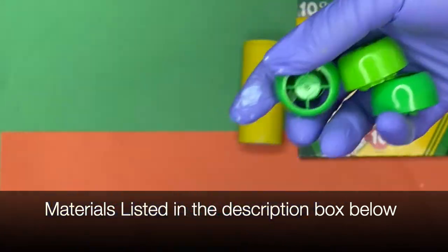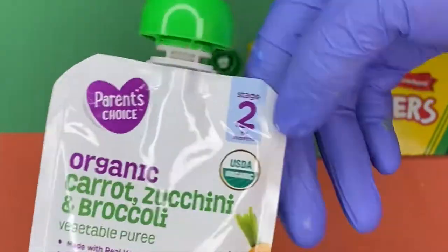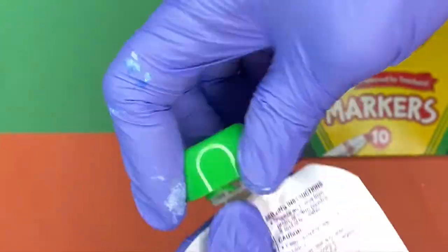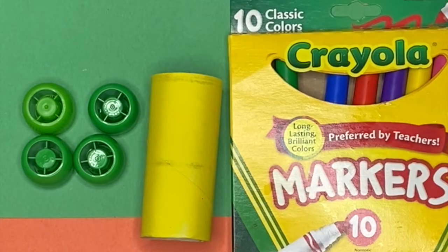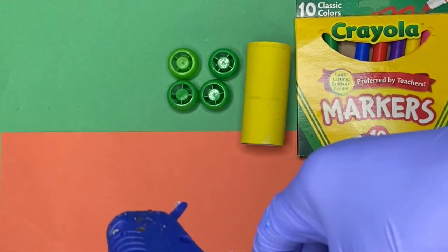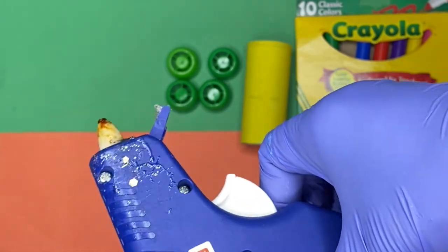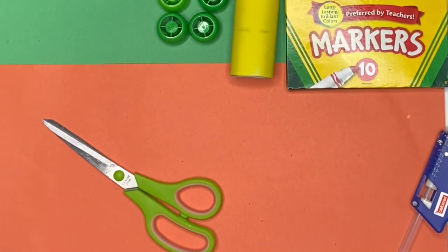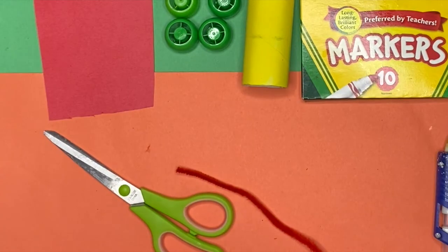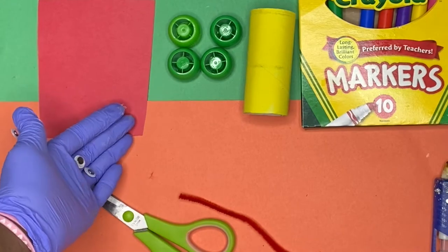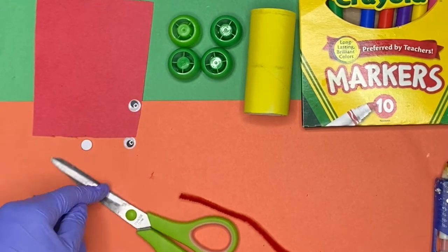Alright, so go ahead and grab some markers, a paper towel roll, go ahead and paint it too. I already painted mine in advance. The little tops off the little squeezies, you're going to need four of those. And you're going to need a hot glue, some scissors, and you're also going to need some construction paper, pipe cleaners. And don't worry guys, everything is listed below. So if you forget, check down there. Some googly eyes.